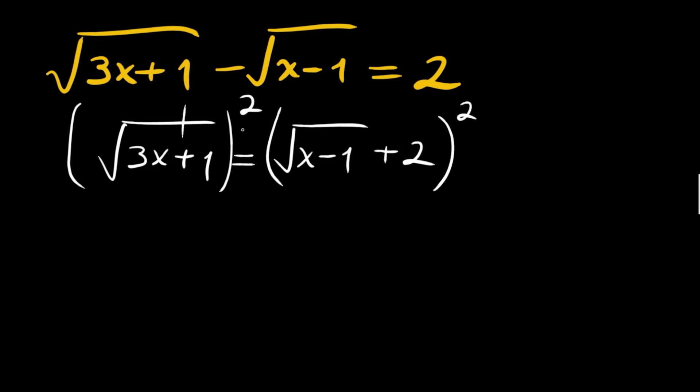Here we will cancel these two and write just 3x plus 1, and here we have square of a sum. So the square of the first one, plus two times the multiplication of two, which is four times root x minus one, plus square of the second.